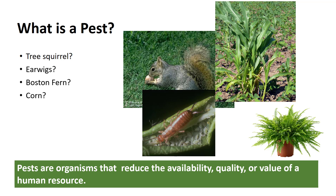Common groups of pests include weed species, vertebrates such as birds and rodents, invertebrates such as insects, ticks, and mites, mollusks, nematodes, and plant pathogenic microorganisms such as bacteria, viruses, fungi, and phytoplasmas.